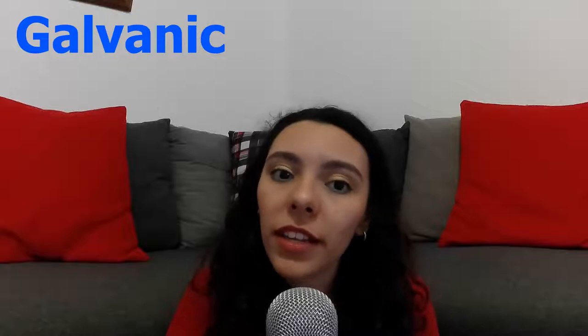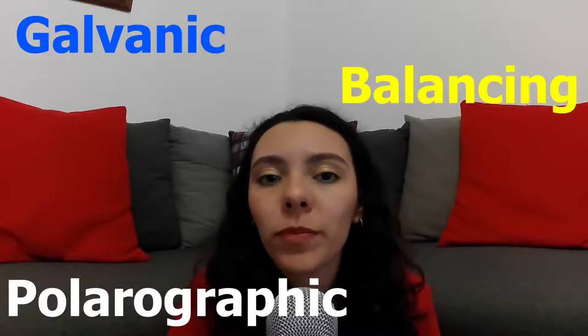Dissolved oxygen is measured using galvanic, polarographic, and equilibrium techniques. The galvanic technique is characterized by the fact that it produces its own electric current thanks to the reduction of oxygen at the cathode. The anode is lead or silver and the cathode is silver with a potassium hydroxide electrolyte.